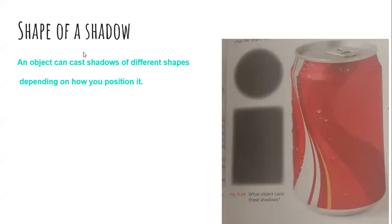Now let's talk about the shape of a shadow. An object can cast shadows of different shapes depending on how you position it. For example, if it is in the horizontal position, it is going to have a shadow like this. If you have the light source above it and it is in the vertical position, then you're going to have a shadow like this.